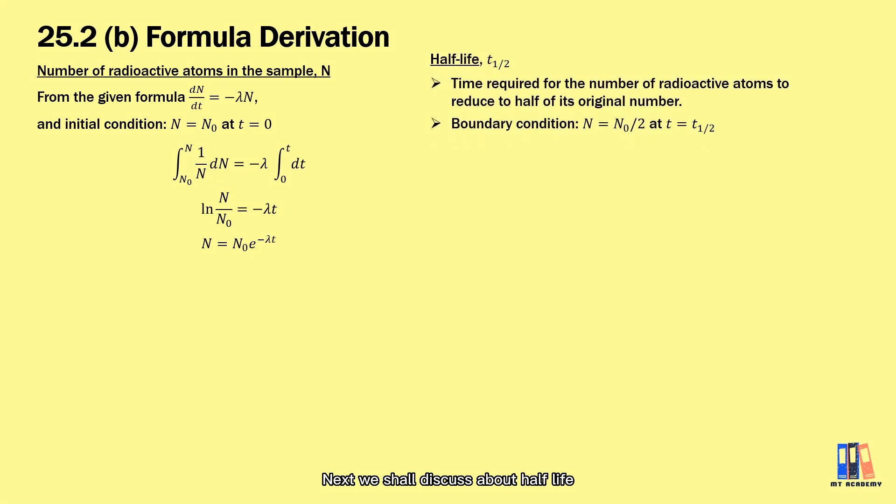Next, we shall discuss about half-life. It is defined as the time required for the number of radioactive atoms to reduce to half of its original number. The boundary condition is that N = ½N₀ when the time is at half-life. We have substituted these values into the previous equation and simplified it. We can obtain the equation λ = ln2 divided by half-life.